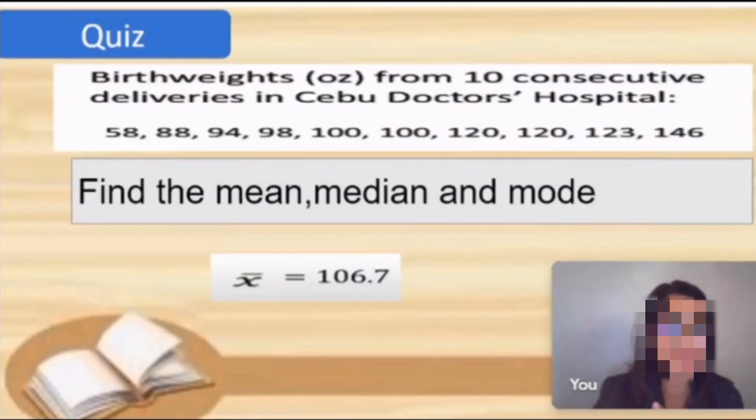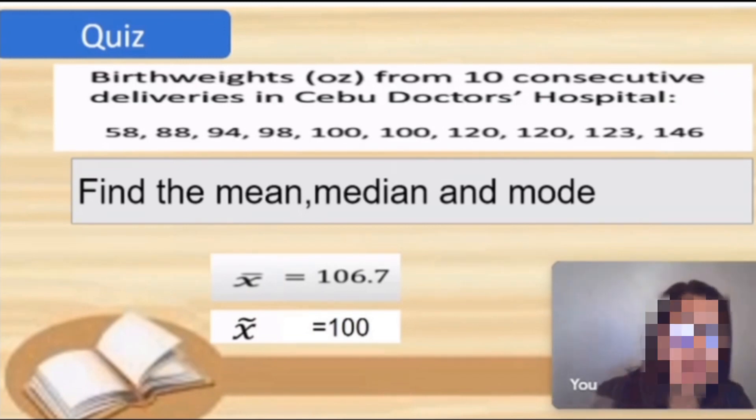I want you to get one half sheet of paper because we will have a quiz. The mean is 106.7. What is our median? Our median is 100. Very good, Carlos.